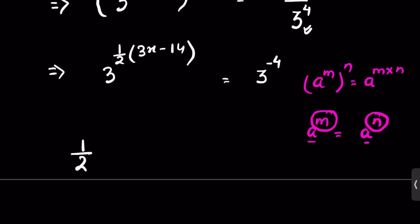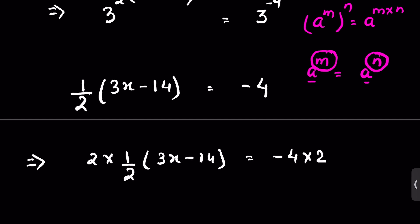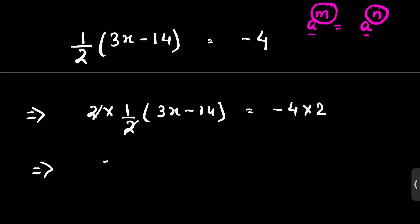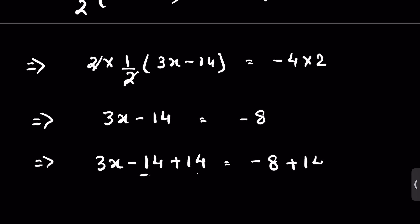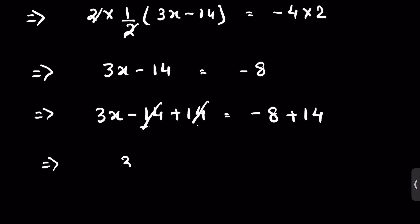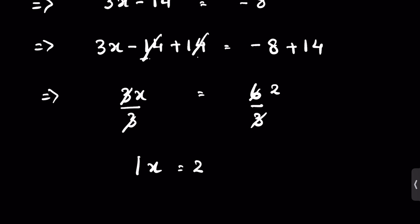So here we can say the exponents are equal: 1/2 times (3x minus 14) is equal to minus 4. Multiply both sides by 2, so 3x minus 14 equals minus 8. Now add 14 to both sides; this 14 and negative 14 cancel, giving 3x equals 6. Divide both sides by 3, so x equals 2. This is our answer.